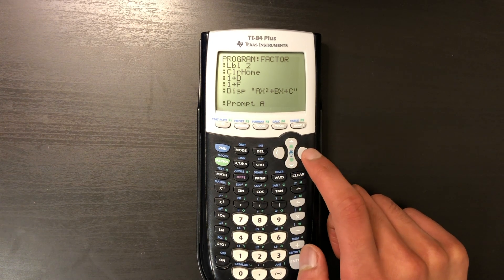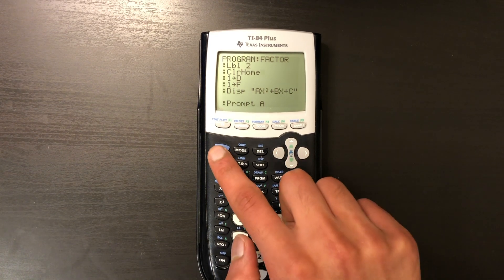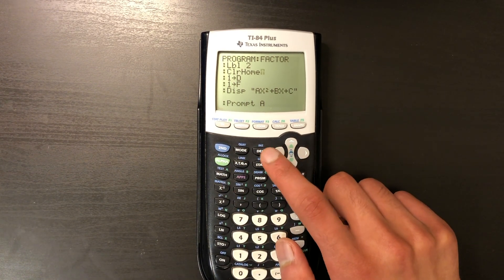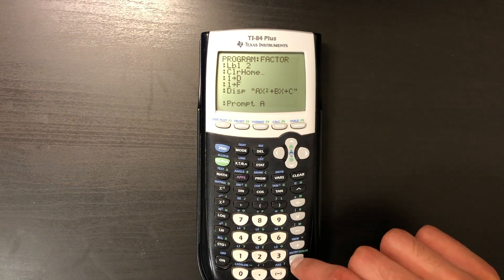So what I want to do is go to the end of that line, hit second, insert, which is just the delete button, and then hit enter one more time.